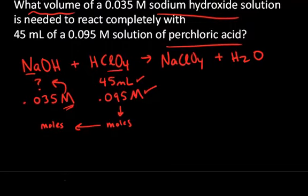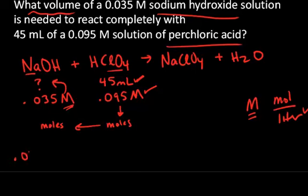Let's start with what's given. One thing to note is this molar unit—remember, it's moles per liter. So if we're going to convert from volume to moles using the mole per liter unit, or the molar unit, then we have to make sure our volume is expressed in liters. So we're going to start with this volume expressed in liters. 45 milliliters is the same as 0.045 liters of perchloric acid.